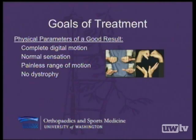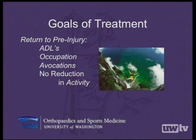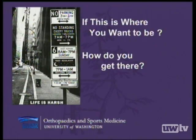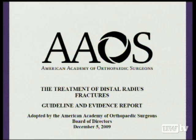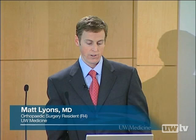The goals of treatment can be defined from two perspectives. Rehabilitatively: complete digital range of motion, normal sensation, pain-free wrist motion, and absence of dystrophy. For the patient: return to previous level of function including activities of daily living, previous occupation, and hobbies. Given the myriad of options without clear preponderance of evidence, the American Academy of Orthopedic Surgery formed a task force that produced, in December 2009, guidelines including 29 recommendations for treatment of distal radius fractures. We will present how we use these guidelines daily at the University of Washington.